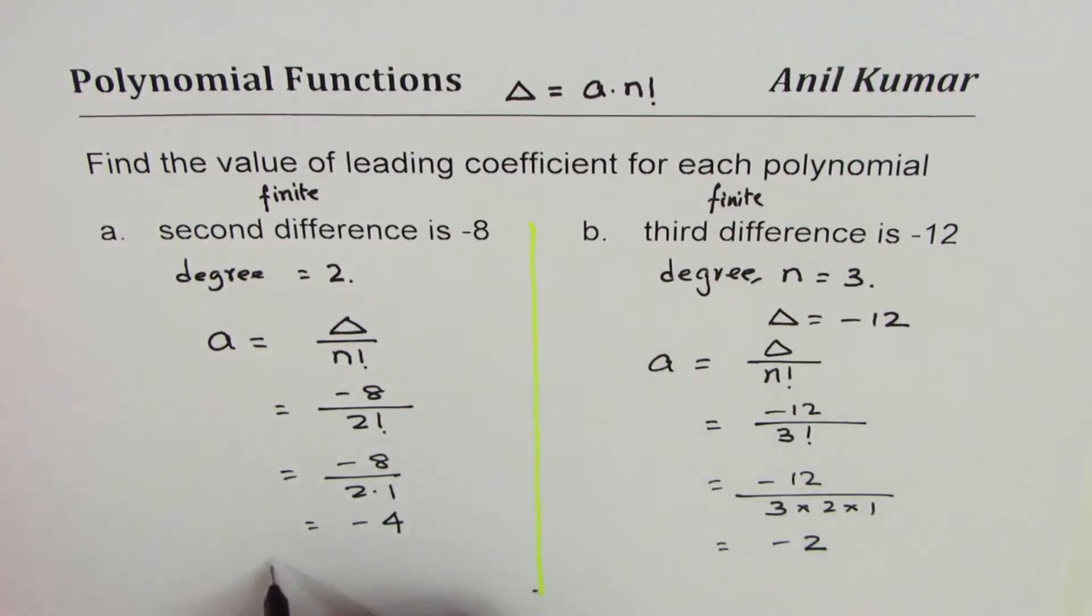So the leading coefficient in this case a_n equals -4. In this case a_n equals -2. So that is how you can actually find leading coefficient if you know the constant finite difference. Anil Kumar, and I hope that helps. Thank you and all the best.